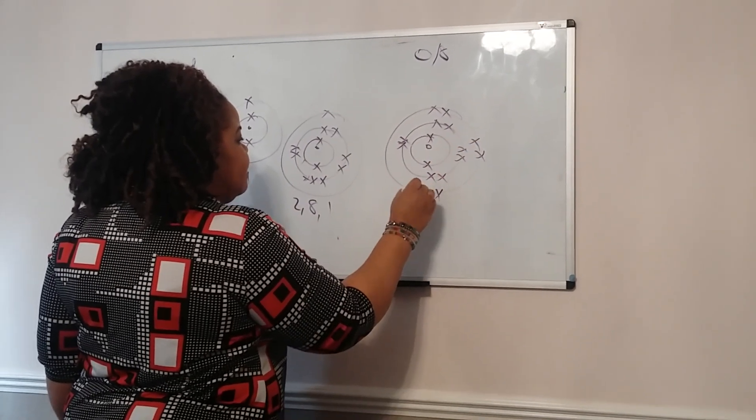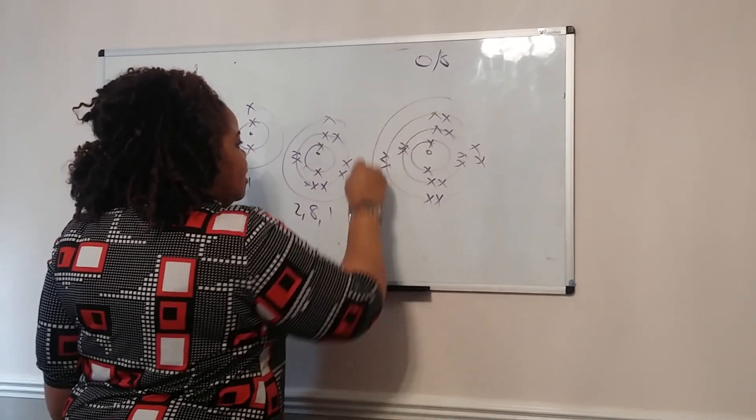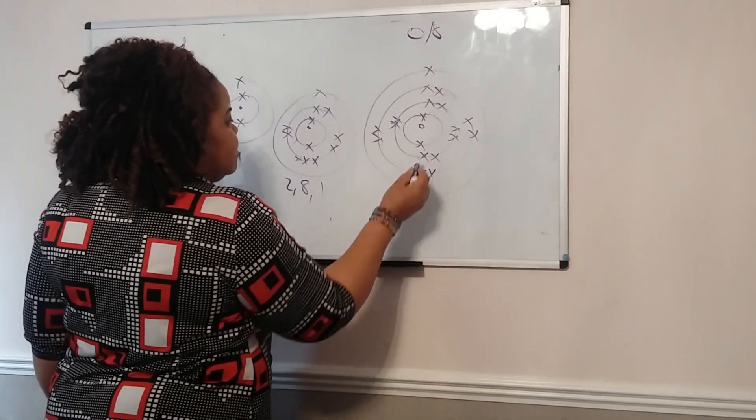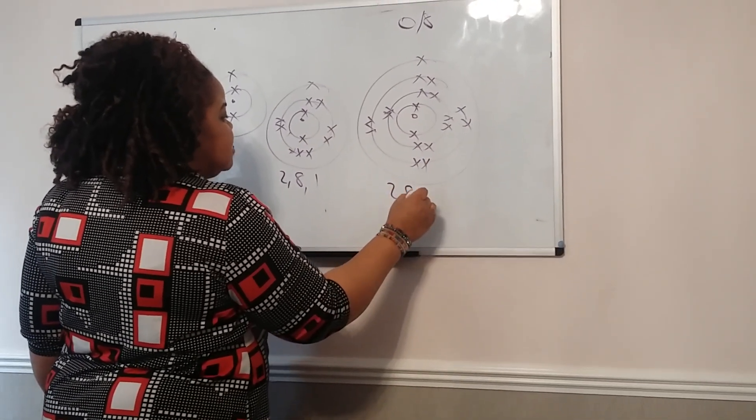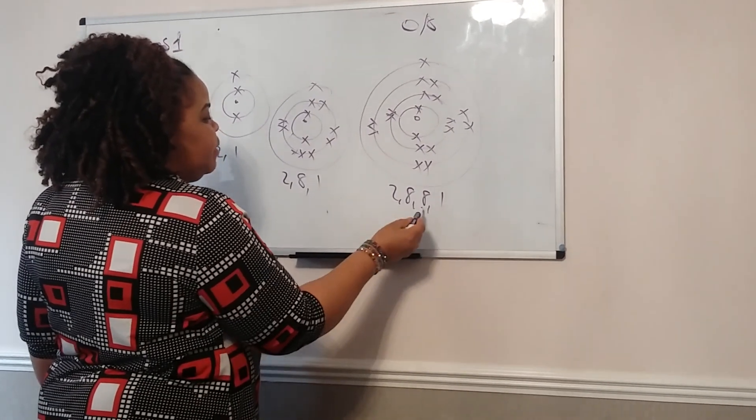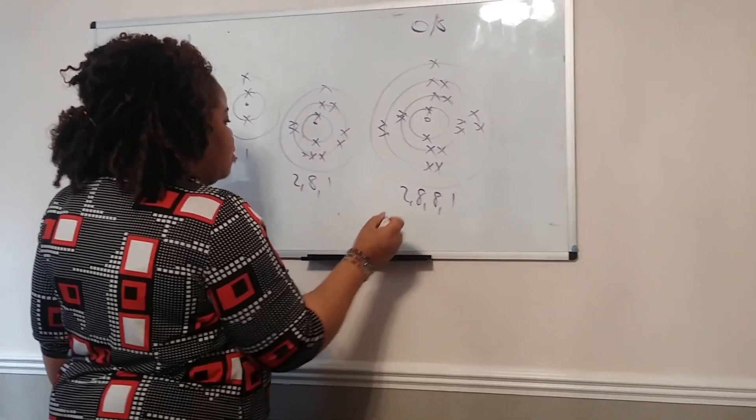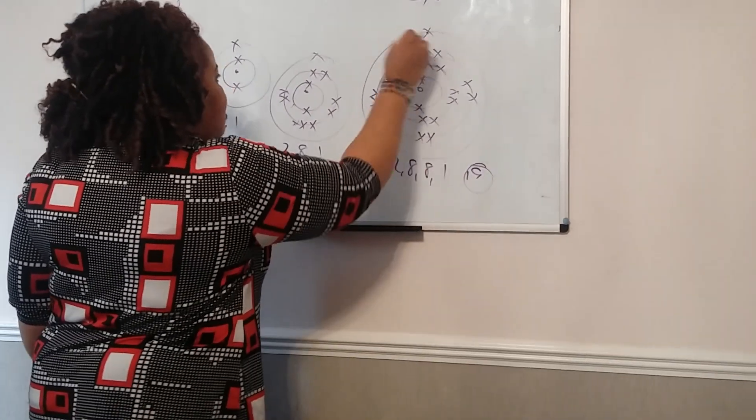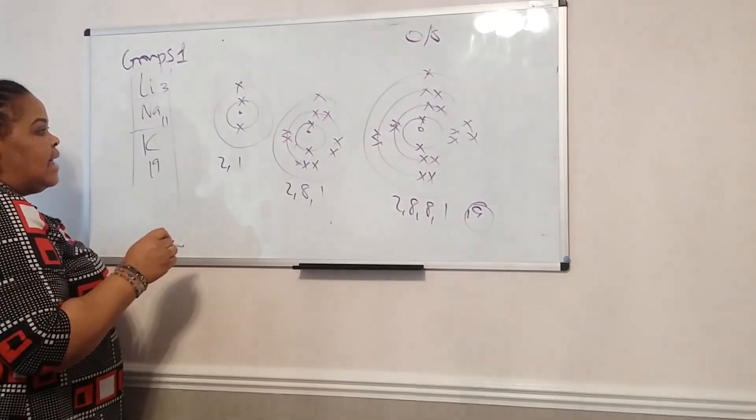I don't have to position them like this. You're not required to. It's easy. So I have 2-8-8-1. So 2-8 is 10, plus another 8 is 18, plus 1 is 19. So you see, they all have one electron on their last shell.